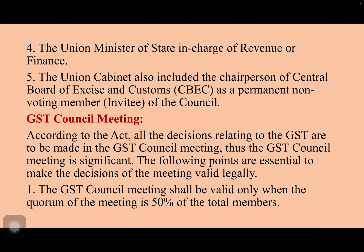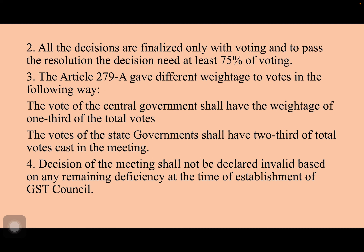Quorum means the attendance of the members. All decisions are finalized only with voting, and to pass a resolution, the decision needs at least 75 percent of voting. Article 279A gave different weightage to votes: the vote of the central government shall have the weightage of one-third of the total votes, and the votes of the state governments shall have two-thirds of the total votes cast in the meeting.